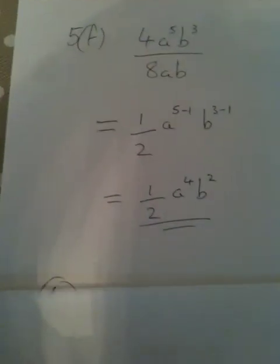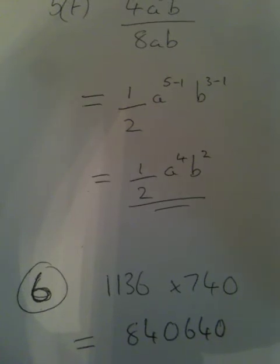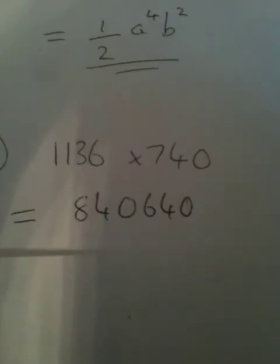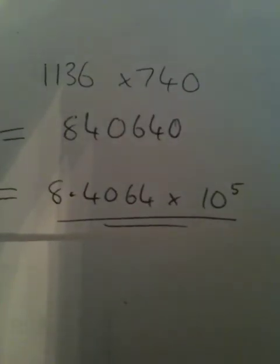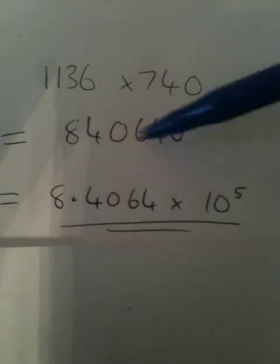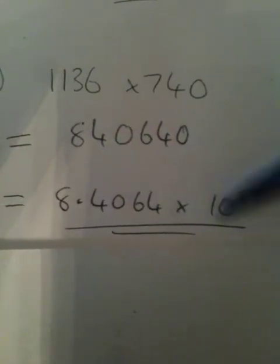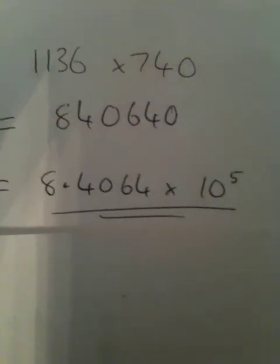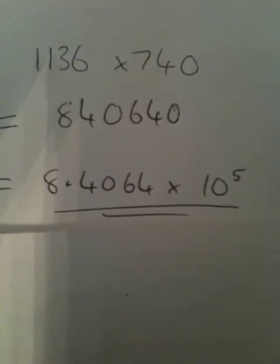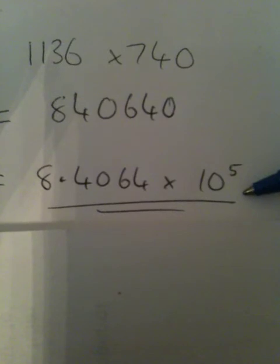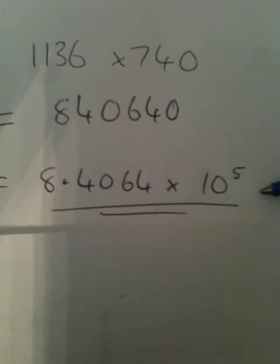Number 6 is about a camera and its resolution — calculate the number of pixels by multiplying length by breadth, which comes out as 840,640. Standard form is always written as a number between 1 and 10 multiplied by 10 to the power of something. Moving the decimal point 5 places tells me it's times 10 to the power of 5, so the answer is 8.4064 × 10⁵.